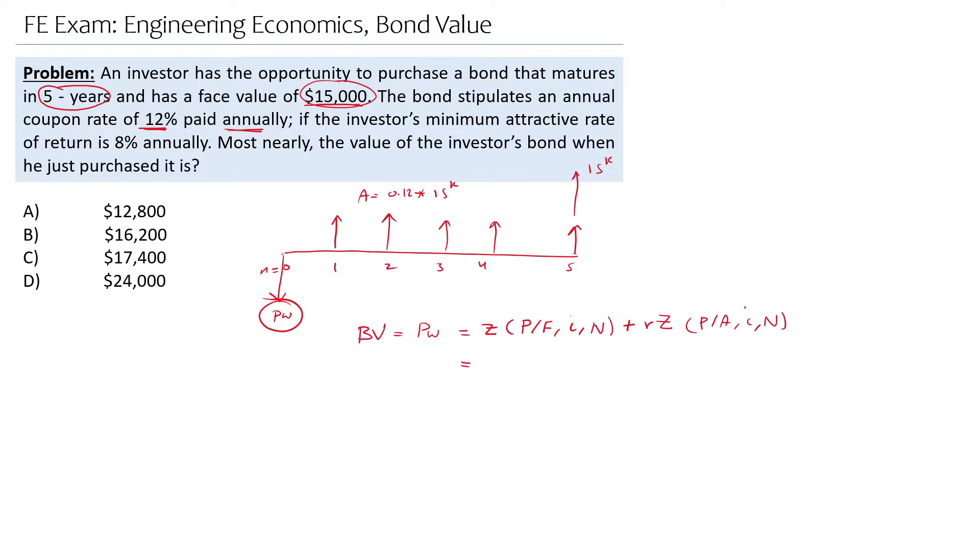In our case, the bond value equals 15,000 times (P/F, 8%, 5) plus 12% multiplied by 15,000 multiplied by (P/A, 8%, 5).